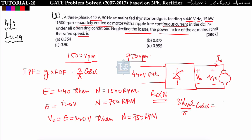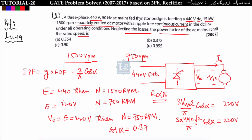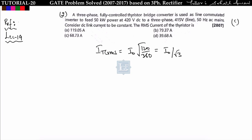We know that V0 equals 3 V_mL upon pi into cos alpha. Setting this equal to 220 volt: 3 multiplied by 440 root 2, divided by pi, into cos alpha equals 220 volt. Solving, we get cos alpha equal to 0.37. Therefore, input power factor equals g into fundamental displacement factor equals 3 upon pi into cos alpha equals 3 upon pi into 0.37, giving input power factor equal to 0.3533. Option A is correct.